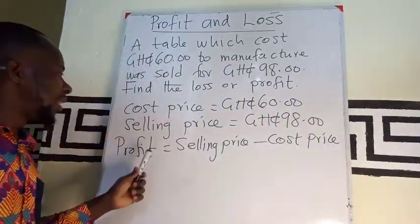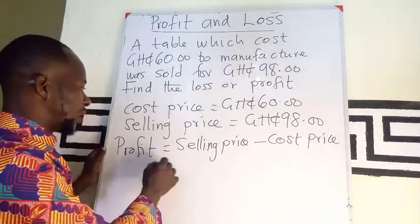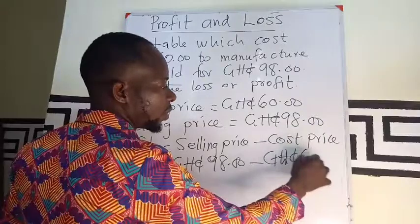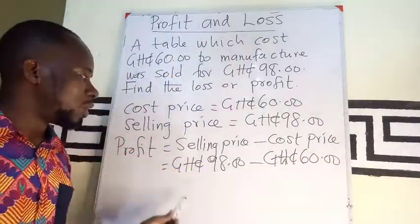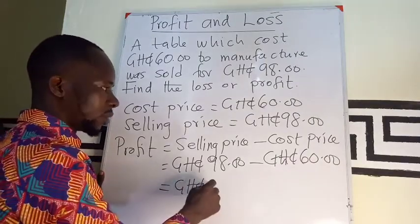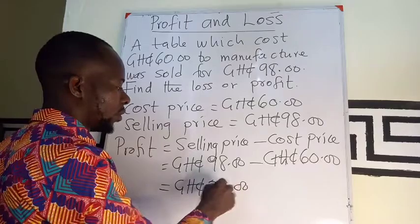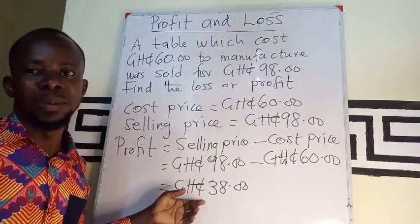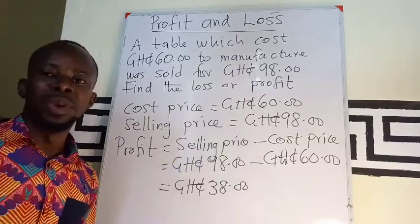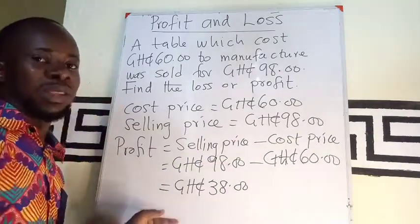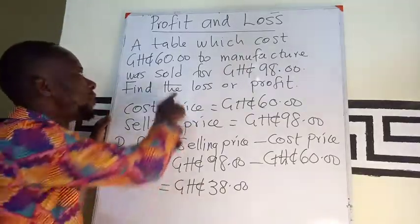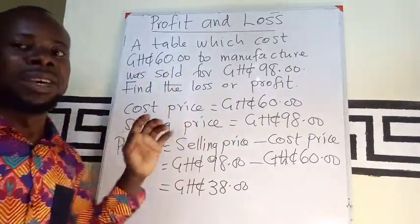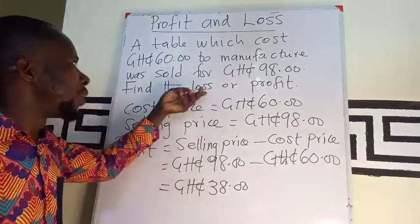Profit equals selling price minus cost price. The selling price is 98 Ghana cedis minus the cost price of 60 Ghana cedis, so the profit made from the table is 38 Ghana cedis. The moment the selling price is bigger than the cost price, we have a profit — a gain. This can also be calculated for a loss: if the table were bought at 98 Ghana cedis and sold for 60 Ghana cedis, since the cost price is now bigger than the selling price, we would incur a loss.